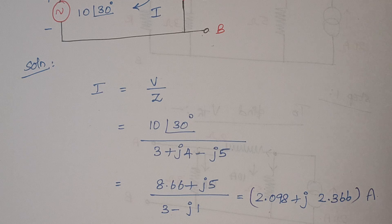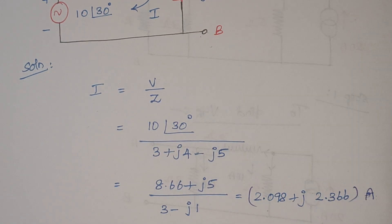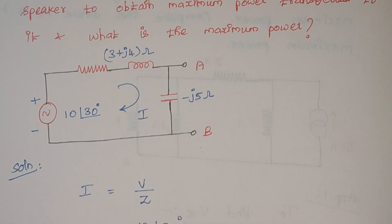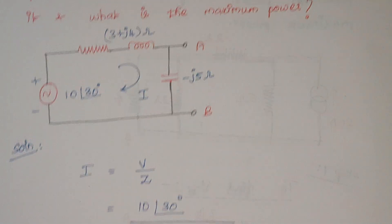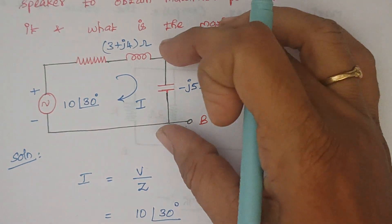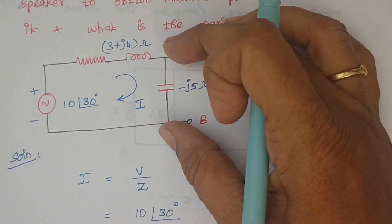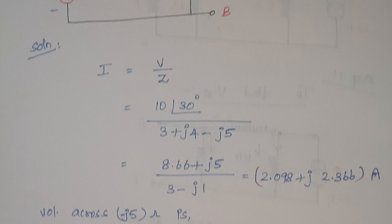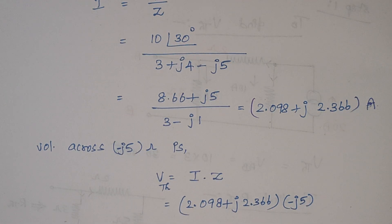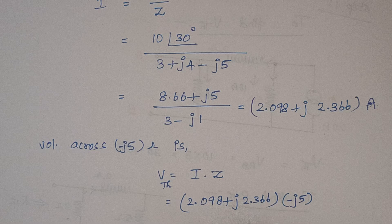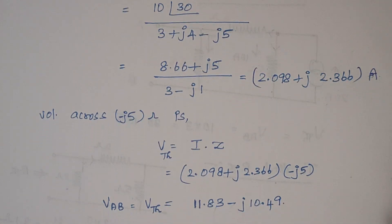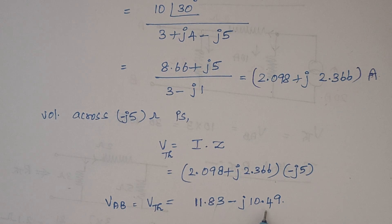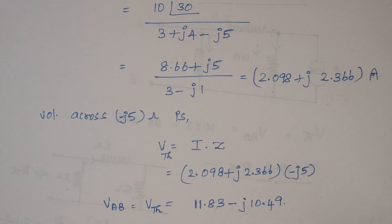Once the value of current is calculated, we need to calculate the voltage across AB. Voltage across AB is nothing but the voltage across this minus J5 ohm. Therefore V_Thevenin is given by I into Z. We know the value of I and we know the value of Z. So just substitute and here the answer is 11.83 minus J10.49. So we have calculated the Thevenin's voltage.